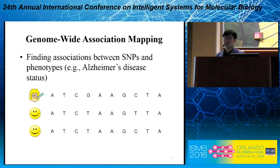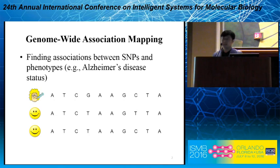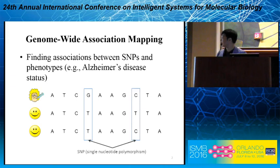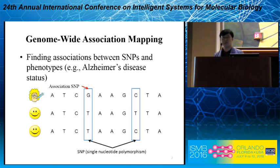First, I would like to show our problem, which is genome-wide association mapping. Here, we would like to find associations between SNPs and phenotypes, such as Alzheimer's disease status. Let me explain this with this small cartoon. We have three individuals with their disease status and their genotypes, and two SNPs. We would like to find which SNP is associated with this disease status. In reality, this problem is much more complex because the number of SNPs considered is typically in the order of hundreds of thousands or millions, and the number of samples is in the order of hundreds or thousands.